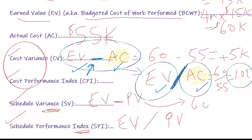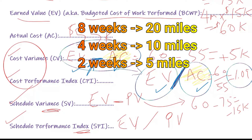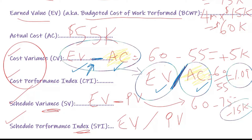For schedule variance: earned value minus planned value. Our earned value is $60,000 and our planned value was $75,000, so we're behind by $15,000. That $15,000 is the equivalent of the one mile we're behind — we should have done five miles in two weeks but only did four miles.